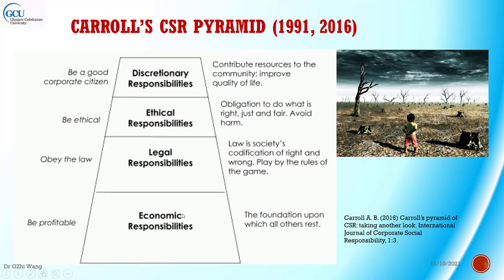Continuing, Carroll — a professor from the United States — developed the concept of the corporate social responsibility pyramid. The fundamental base is economic responsibility: making profit, because without profit, organizations and industries cannot exist and people have no income to support their families. Building up the pyramid, at the top is discretionary responsibility — looking after the community, quality of life, contributing to human sustainable resources, and making philanthropic donations. These are discretionary but represent our ethical social responsibility.